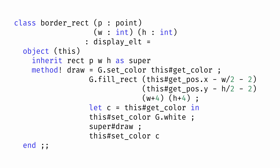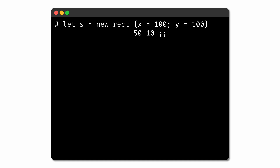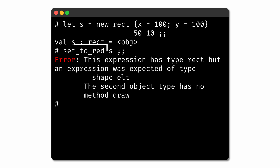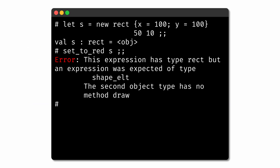Finally, one other situation we might run into with object-oriented programming in OCaml is this. Say we defined a function setToRed that accepts a shape_elt and sets its color to red by invoking the setColor function. What were to happen if we create a new rectangle and then call setToRed on this rectangle? In this case, we actually get an error. The reason is that setToRed is expecting a shape_elt, but instantiating the rect class gave us objects of type display_elt. But as we know, display_elt is a subtype of shape_elt, so we should be able to use it any time we need a shape_elt. However, OCaml's type inference system doesn't have the ability to determine that on its own, so we need to help it. We can use the colon greater than operator (:>) to instruct the call to setToRed to treat the rectangle as a shape_elt, and now the code will work without error.